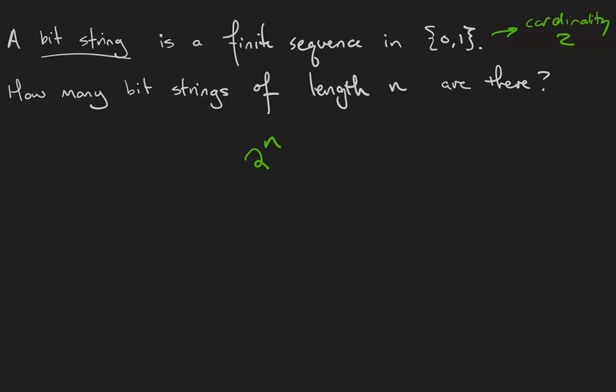Just to check, there are two to the three bit strings of length three. There's eight of them. They are 0 0 0, 0 0 1, 0 1 0, 0 1 1, 1 0 0, 1 0 1, 1 1 0, 1 1 1.